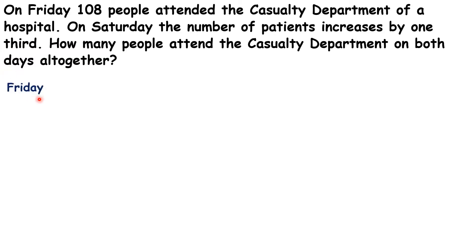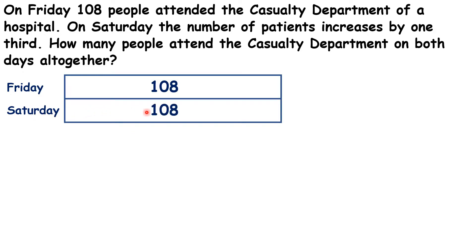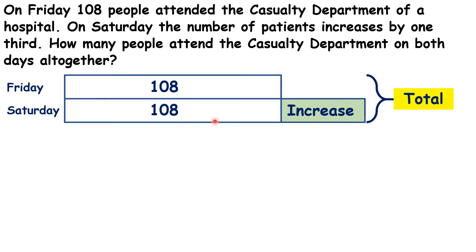So on Friday there were 108 people. On Saturday there was an increase of one-third, so there were 108 plus another one-third of 108. And we need to work out the total for Friday and Saturday.